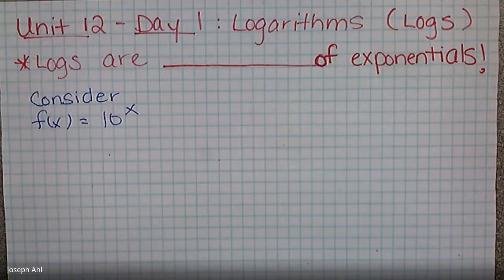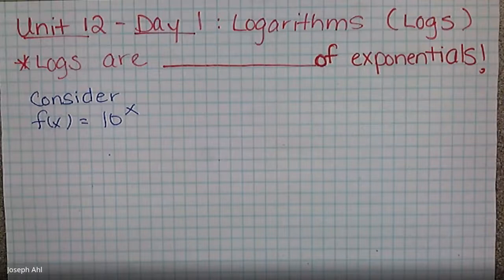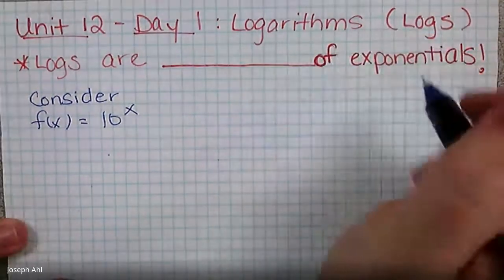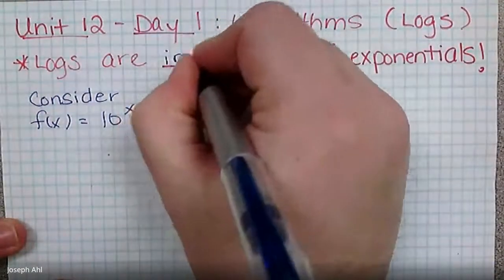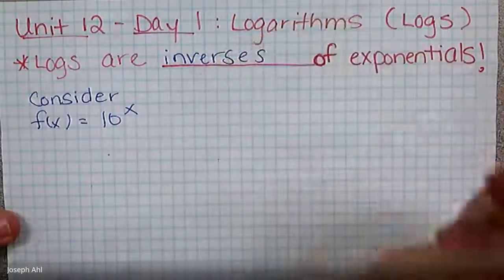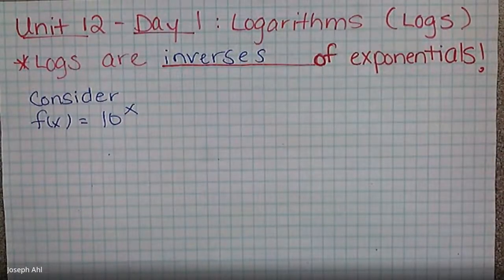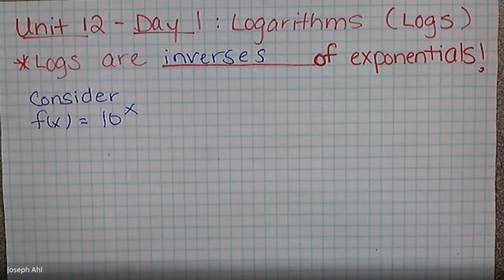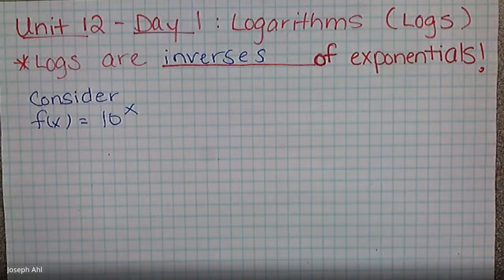So when we talk about logs in general, why are logs critically important for our course? It's because logs are inverses of exponentials. We need an inverse operation to raising something to a power that has a variable in it. If we have two to the X, we need an operation that undoes that X that's up in the exponent. We don't have anything right now.